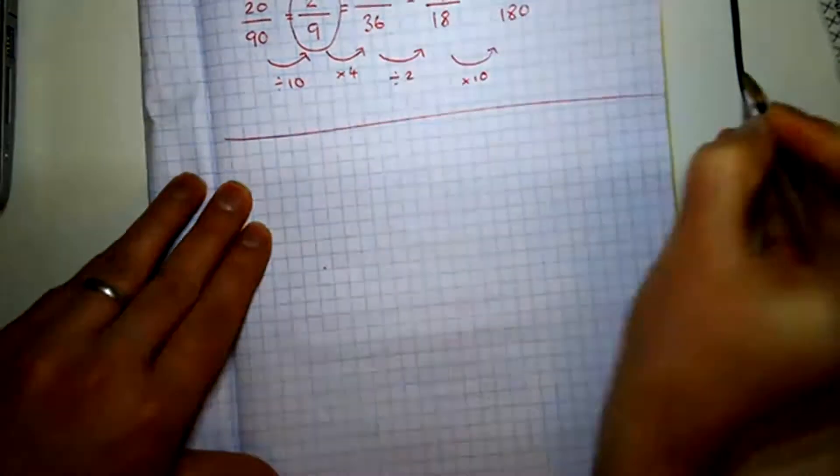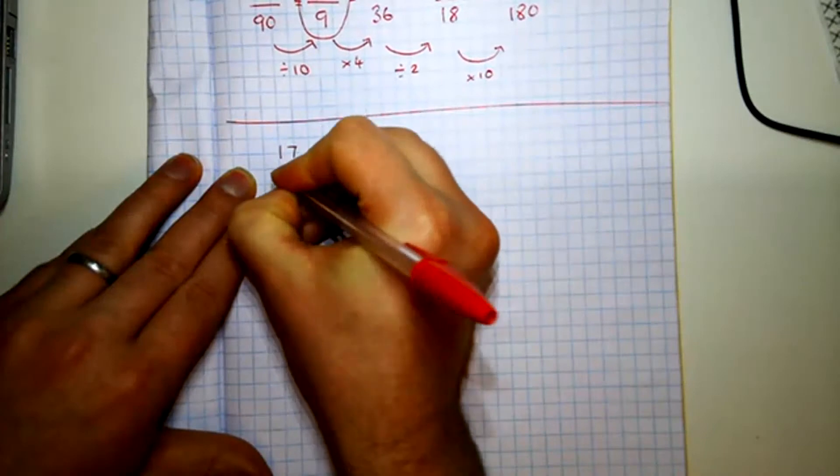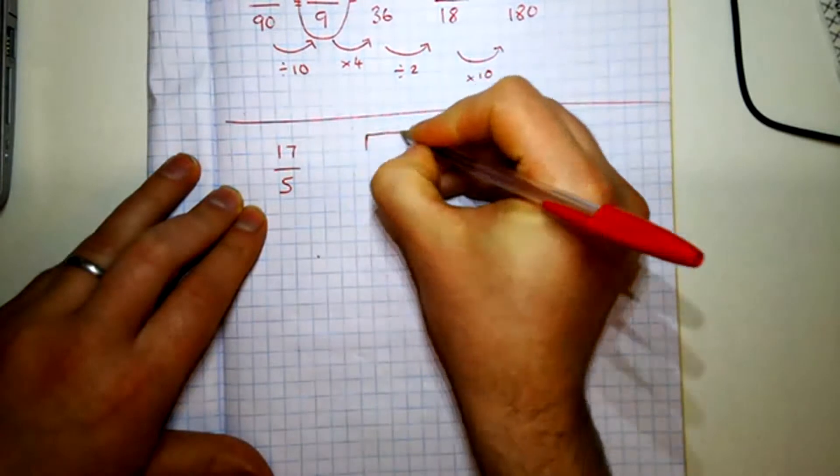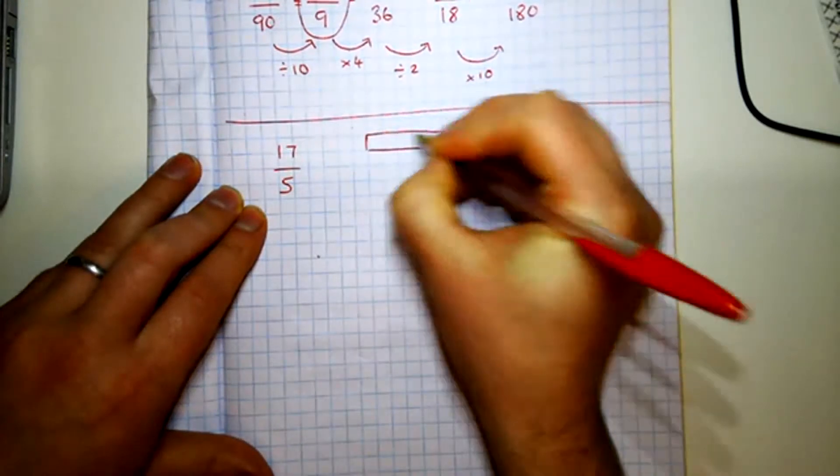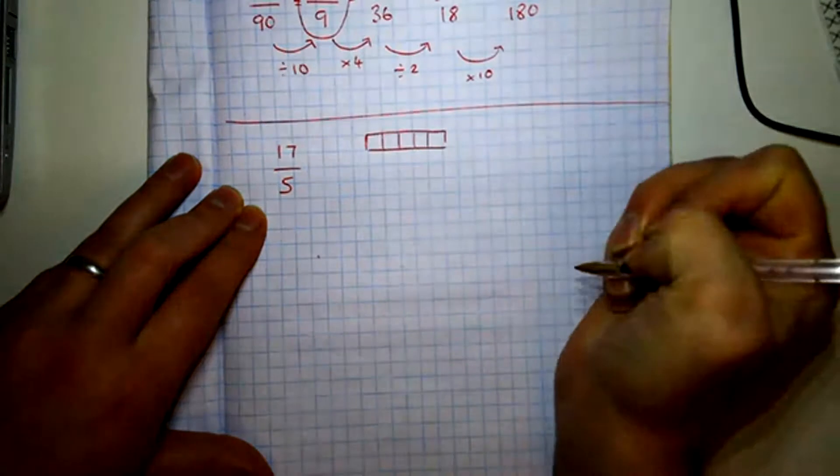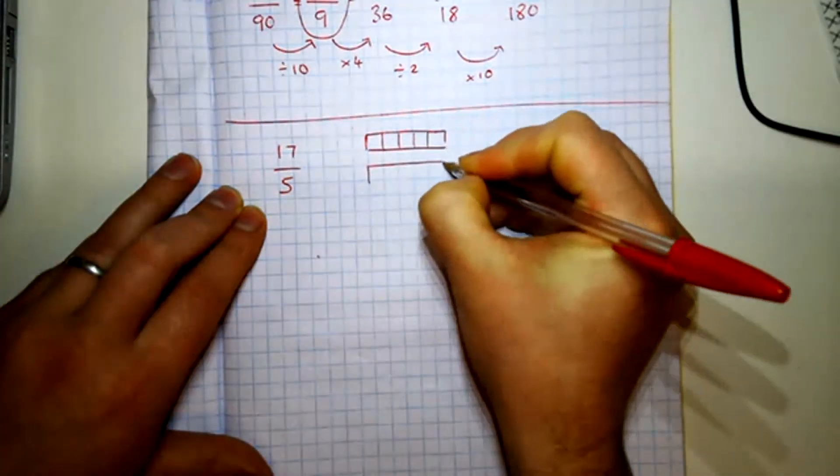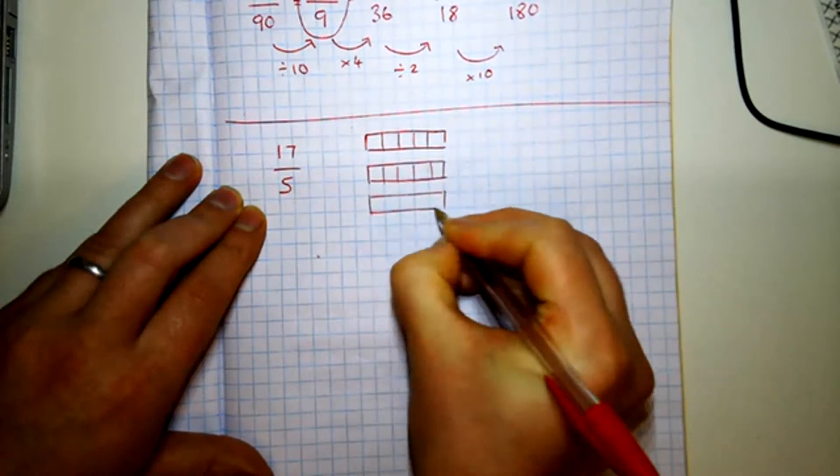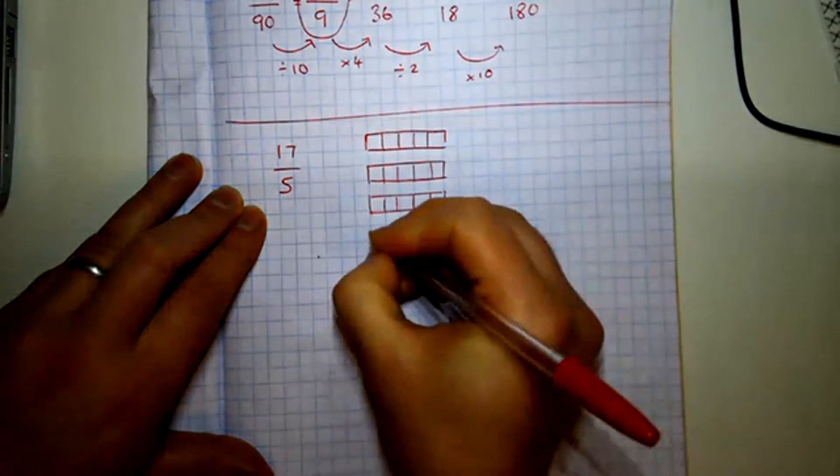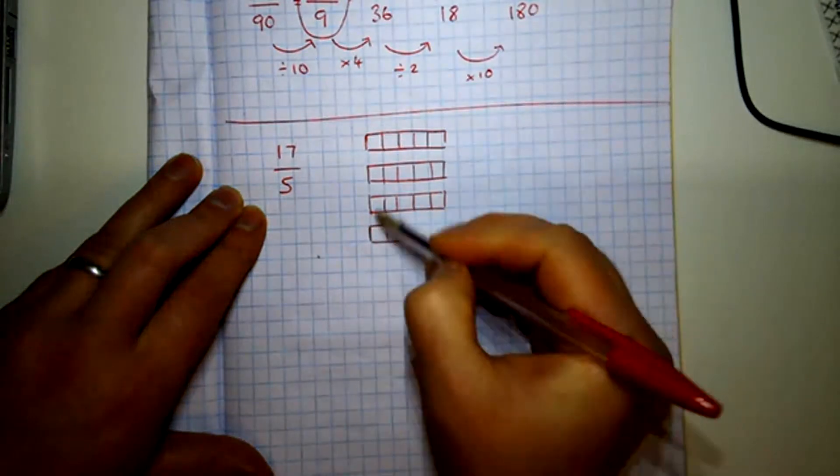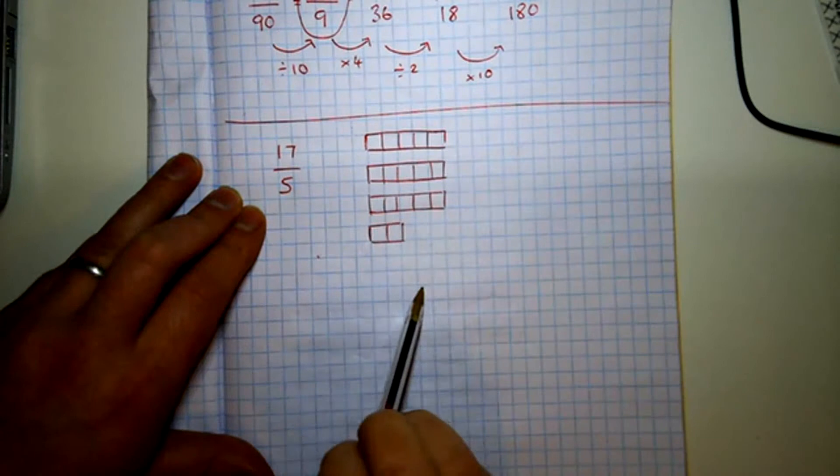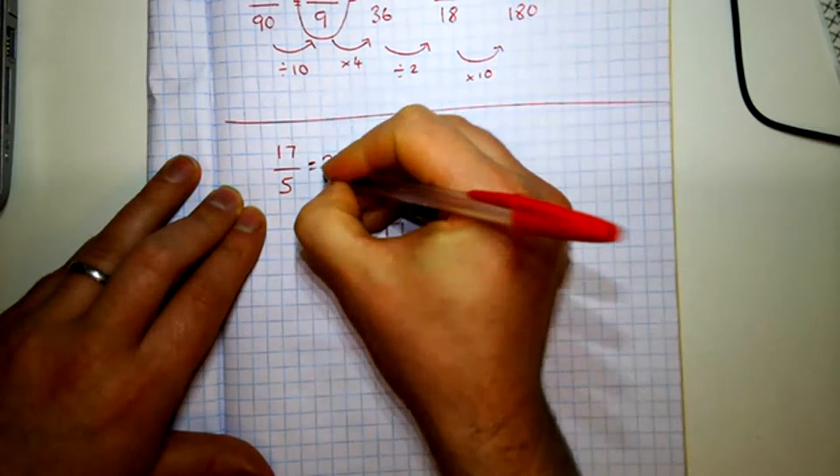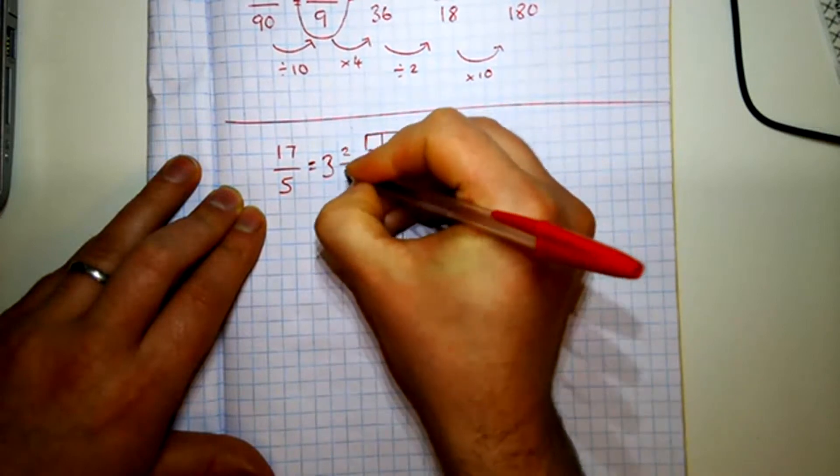So the next thing we're going to look at is improper fractions. So 17 fifths. If I have whole ones split into fifths, if I have three lots of these whole ones and a couple more, there you can see I've got 17 fifths. And that is equivalent to I've got three whole ones and I've got two little pieces left, so two fifths.